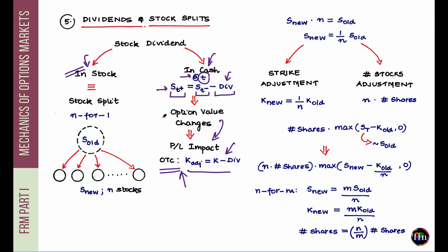Now let's consider dividends paid in the form of stock. For example, if I'm holding one stock and it pays a 20% stock dividend, then for every one stock I hold I'll be given 0.2 new stocks — 20% of one. After this dividend is paid out, I'll be holding 1.2 stocks.